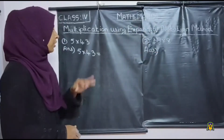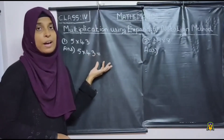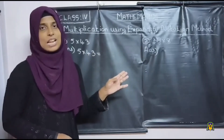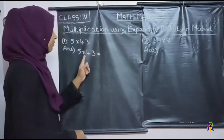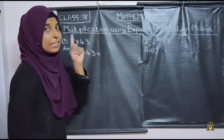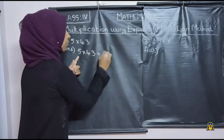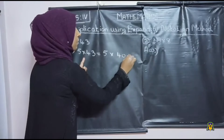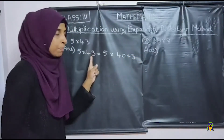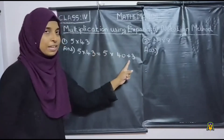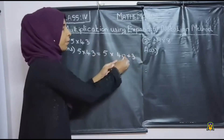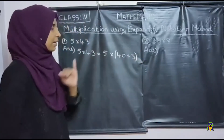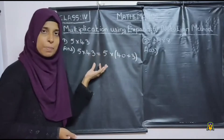So the first step is we want to write 43 in the expanded notation. Expanded notation means expanded form. We already studied this in the first lesson on numbers expanded form. So we want to write 43 in its expanded notation.